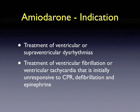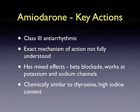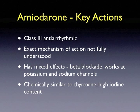The next drug to discuss is amiodarone. Its indication is the treatment of ventricular fibrillation or ventricular tachycardia that is initially unresponsive to chest compressions, defibrillation, and epinephrine. The key actions of amiodarone in a cardiac arrest state are that it acts as a class 3 antiarrhythmic with mixed effects — it works as a beta blocker and also has effects to block potassium and sodium channels. It's chemically similar to thyroxine and has a high iodine content, and its exact mechanism of action is not fully understood.